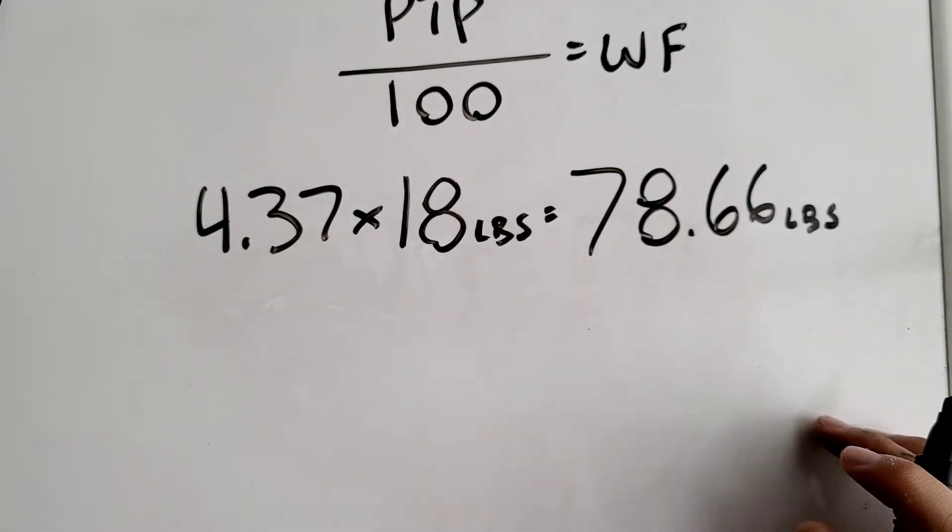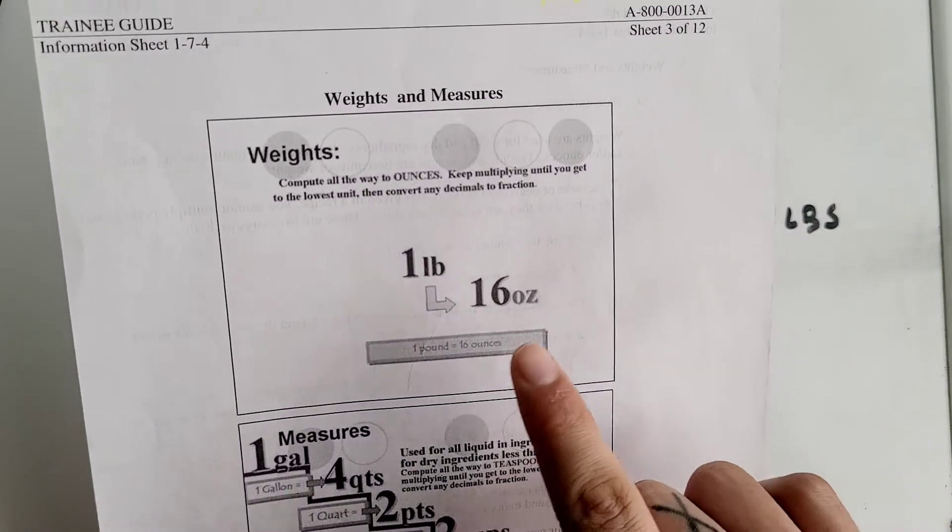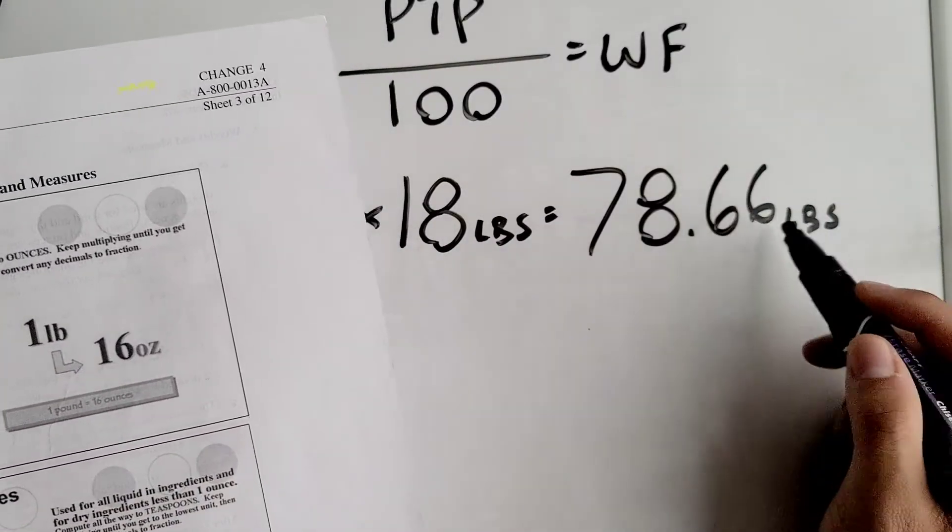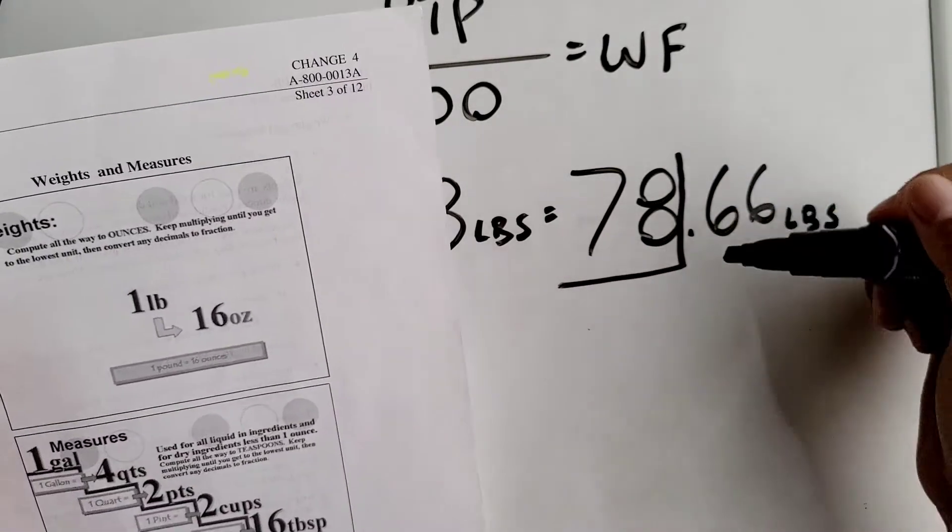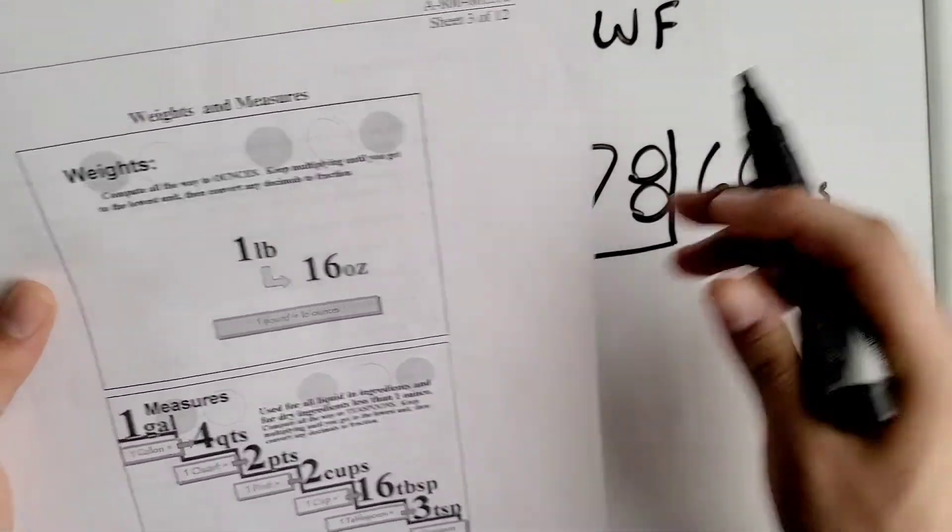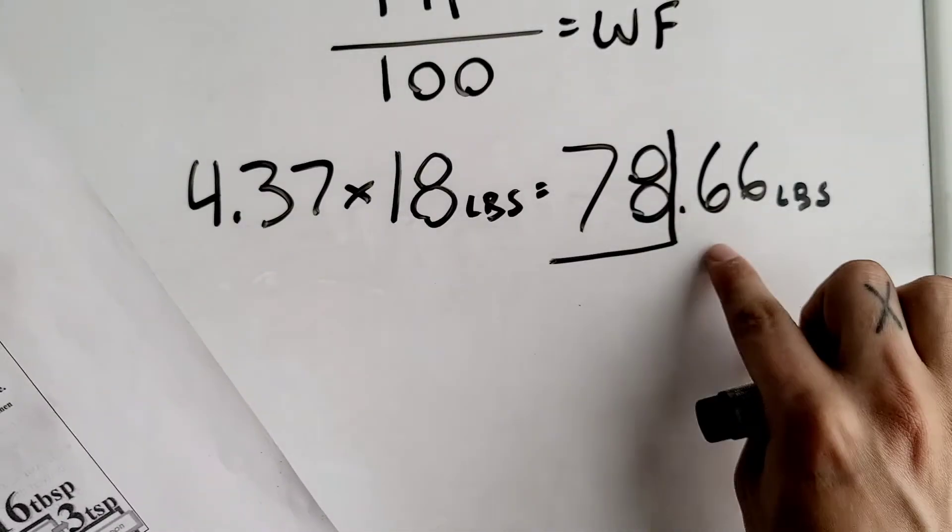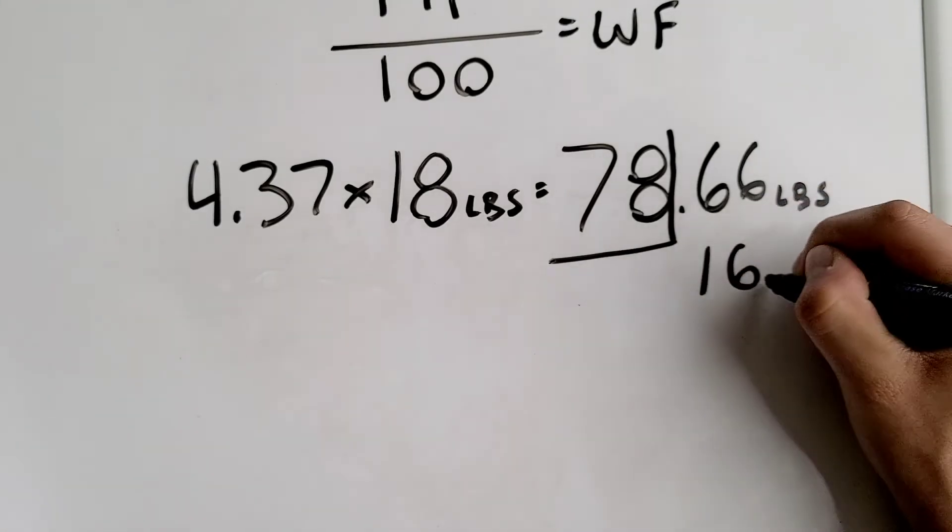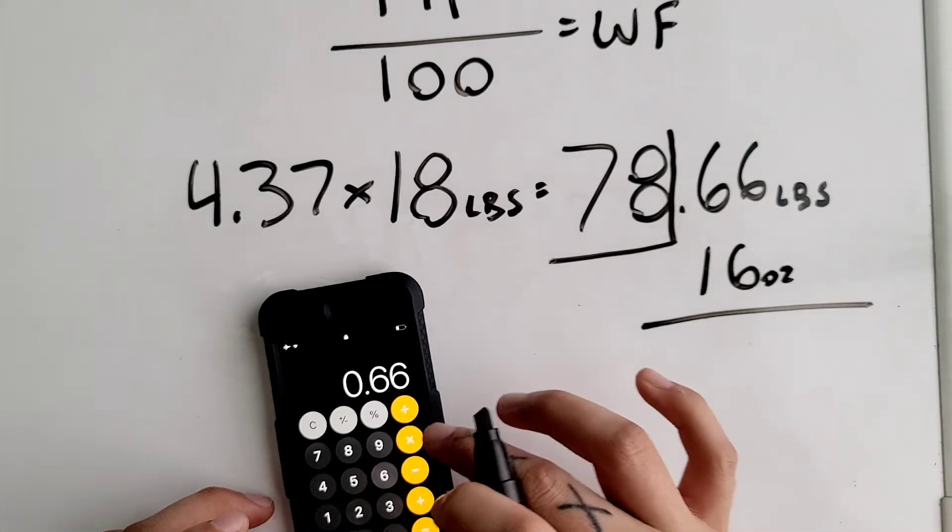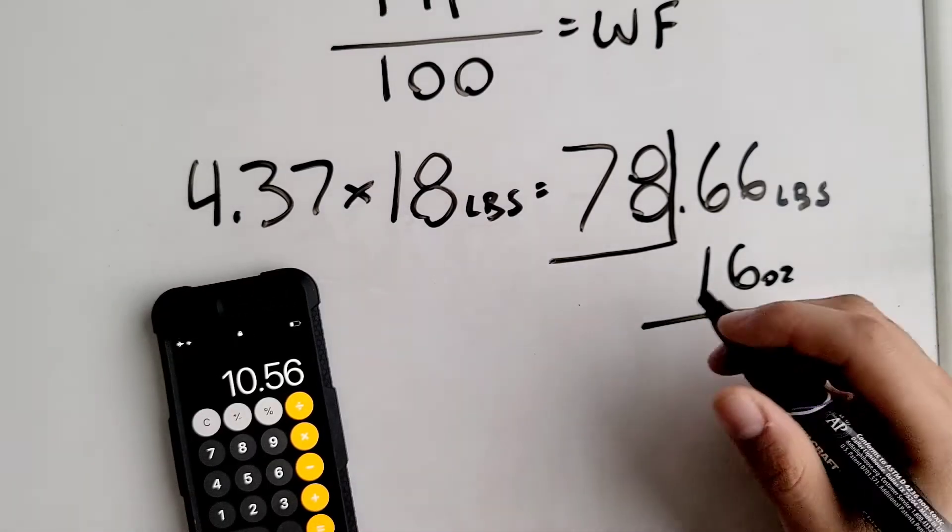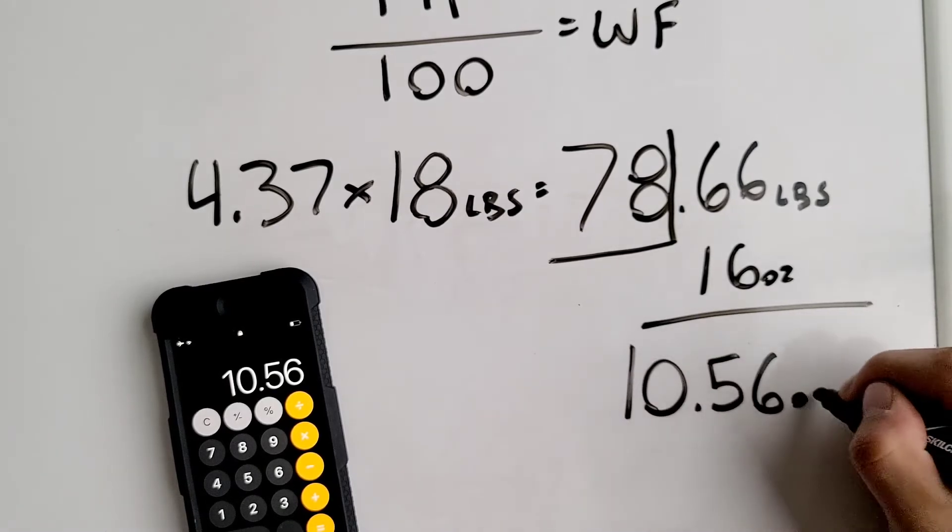Don't forget to label all your stuff. We're trying to get it to its lowest unit. We can't leave it like this because of that decimal. Its lowest unit when it comes to weights is ounces, so we're trying to convert this into ounces. You have to block this number off and multiply your remainder by 16 ounces. Multiply the decimal by 16 ounces, which equals 10.56 ounces. Label everything.